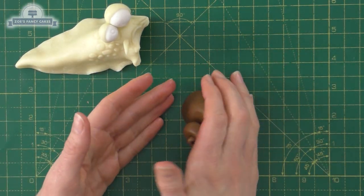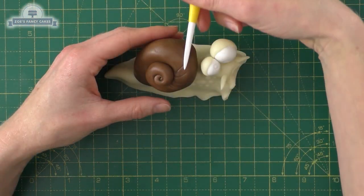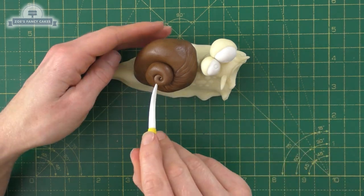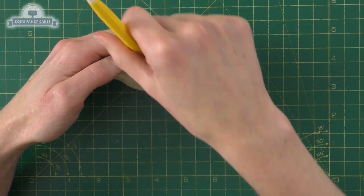I'm going to place it on his back, then I'm going to put some lines in using my modeling tool to add a bit of texture, kind of coming out from the coil outwards. Just going to use an edible pen for the eyes.